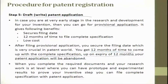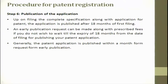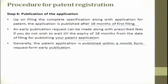When you complete the required documents and your research work is at a level where you can have prototypes and experimental results to prove your inventive step, you can file a complete specification patent. Upon filing the complete specification along with the application for a patent, the application is published after 18 months of the first filing. An early publication request can be made along with the prescribed fee if you do not wish to wait until the expiry of 18 months. Generally, the patent application is published within a month from the request for early publication. If you want to speed up, you have to pay more money and provide some justification.